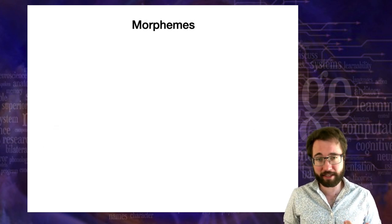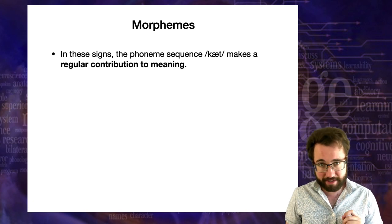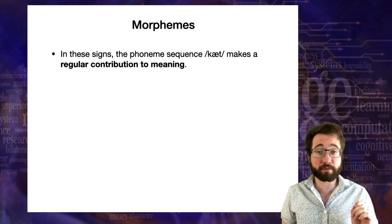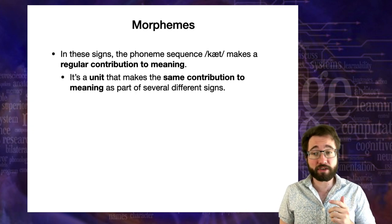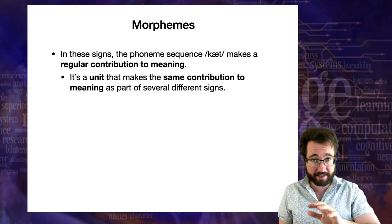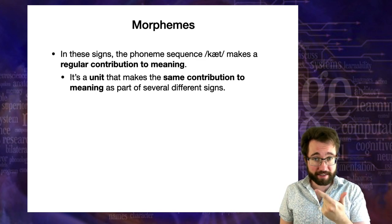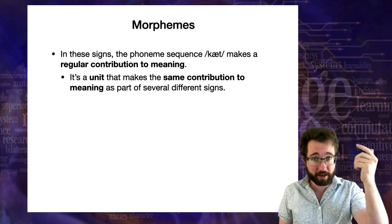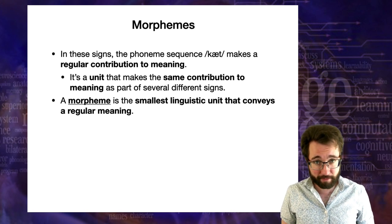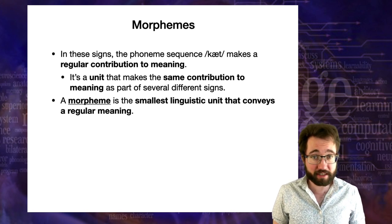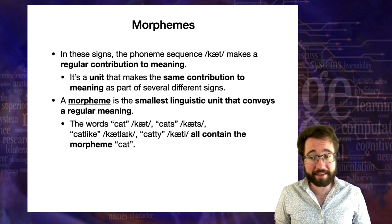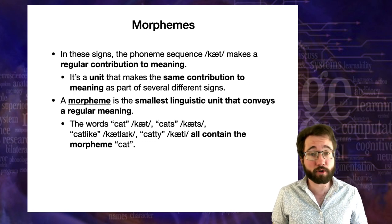Now we're ready to talk about morphemes. In those signs, the phoneme sequence 'cat' makes a regular contribution to meaning — it's a unit making the same contribution as part of several different signs. A morpheme is the smallest linguistic unit that conveys a regular meaning. So the words cat, cats, cat-like, and catty all contain the morpheme 'cat.'